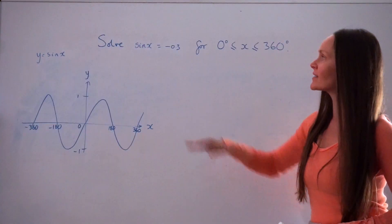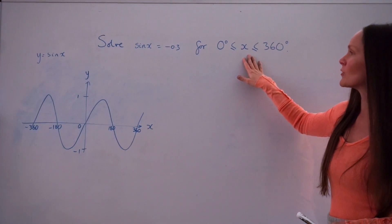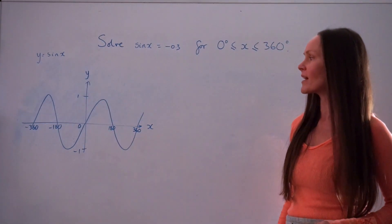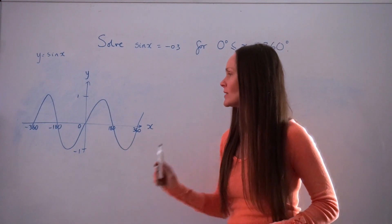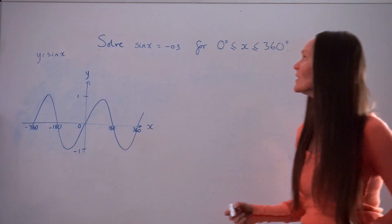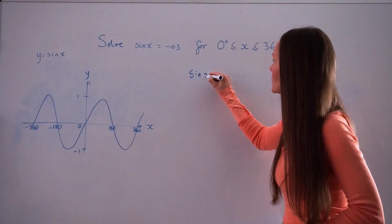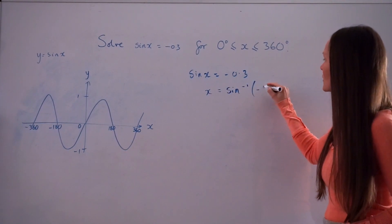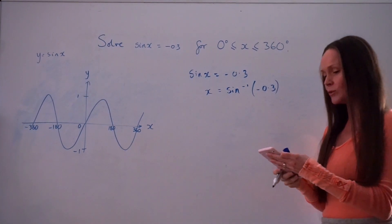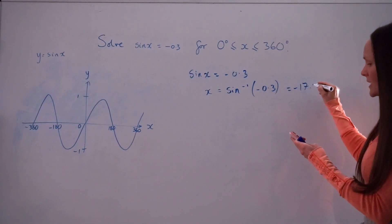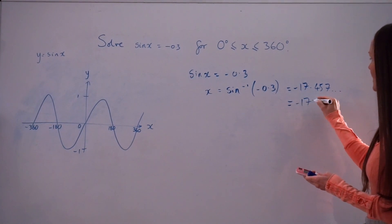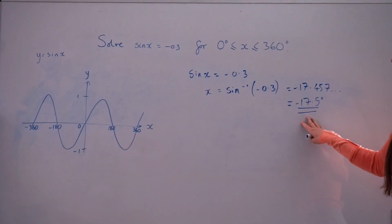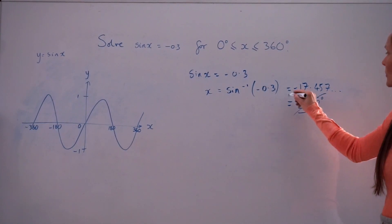In the next example, we have to solve sin x equals negative 0.3 for the same range of x values. Here's the sketch of y equals sin x — it goes up to positive 1, down to negative 1, and intersects the x-axis at 180, 360, negative 180, negative 360, and so on. I'm going to write down the equation and type sin minus 1 of negative 0.3 into the calculator. That gives negative 17.457, which is negative 17.5 degrees to one decimal place. This first solution doesn't fall within the range — it's a negative number, so it won't be a solution to our equation.